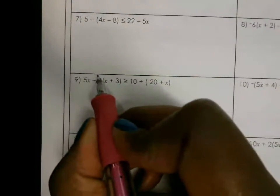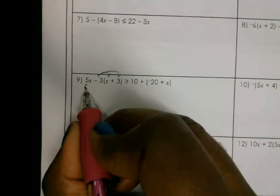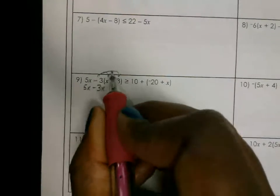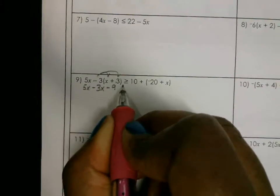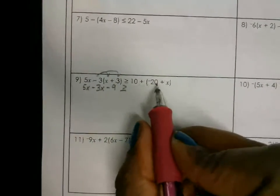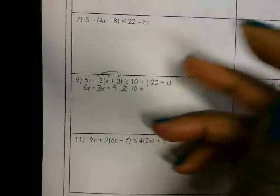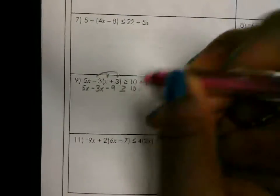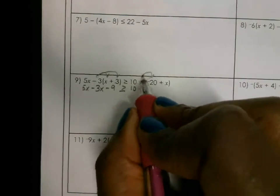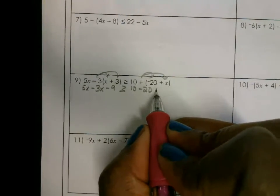Let's go down and do one like number 9. This is a little longer. We're going to do distributive property first. Bring this down — 5x. This is negative 3x here, this is a negative 9. On this side, you can take it out of parentheses, you can't combine anything here. So we've got 10, let's go ahead and make this minus 20. Positive times a positive — this is a positive x.